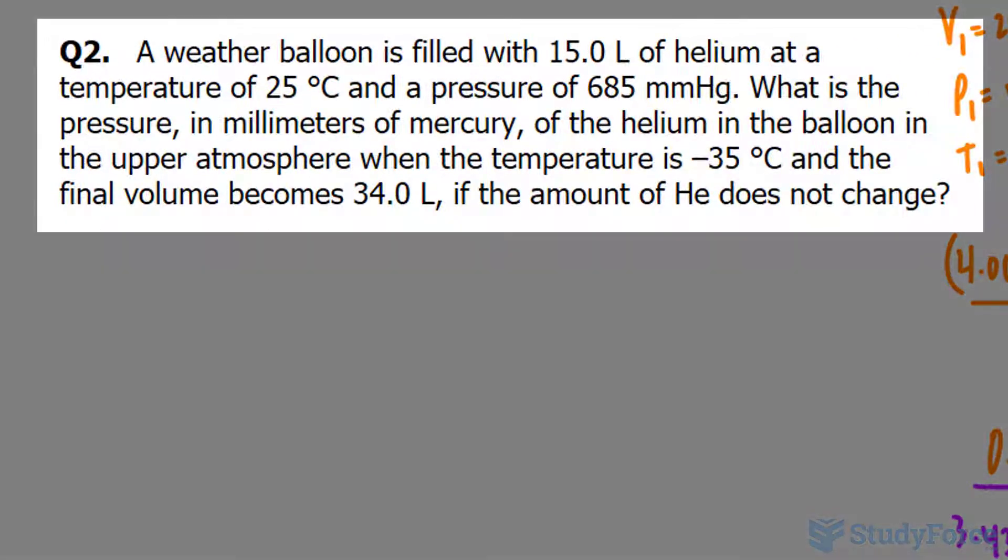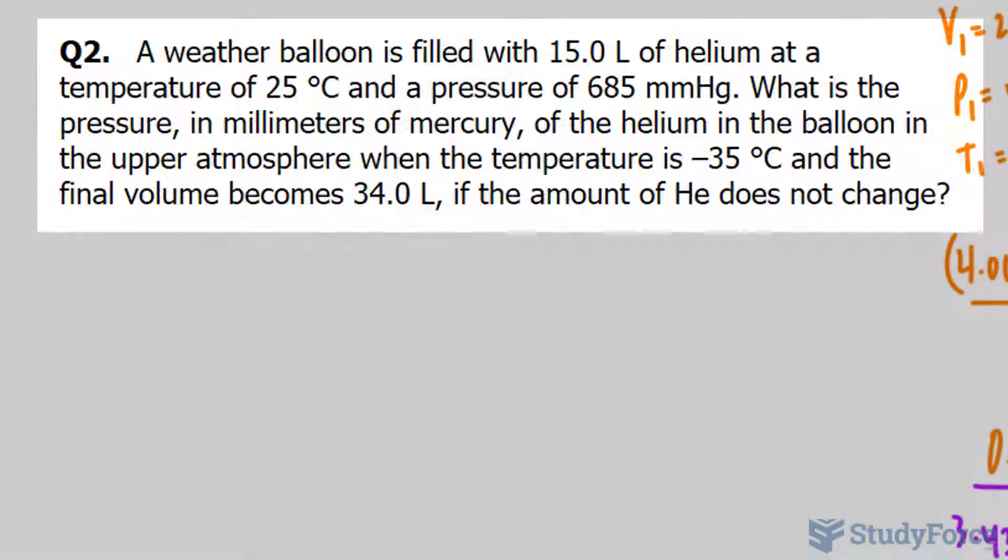A weather balloon is filled with 15.0 liters of helium at a temperature of 25 degrees Celsius and a pressure of 685 millimeters of mercury. What is the pressure in millimeters of mercury of the helium in the balloon in the upper atmosphere when the temperature is negative 35 degrees Celsius and the final volume becomes 34.0 liters if the amount of helium does not change?